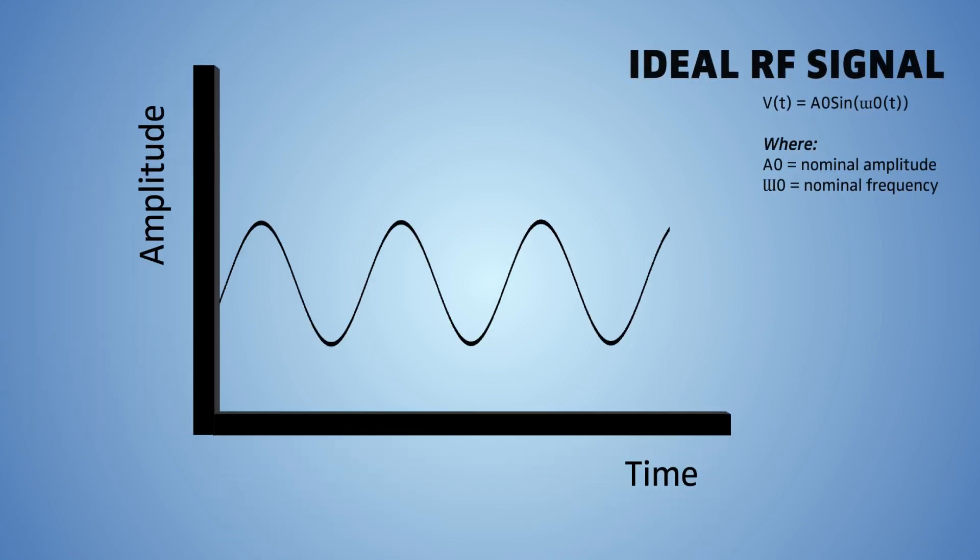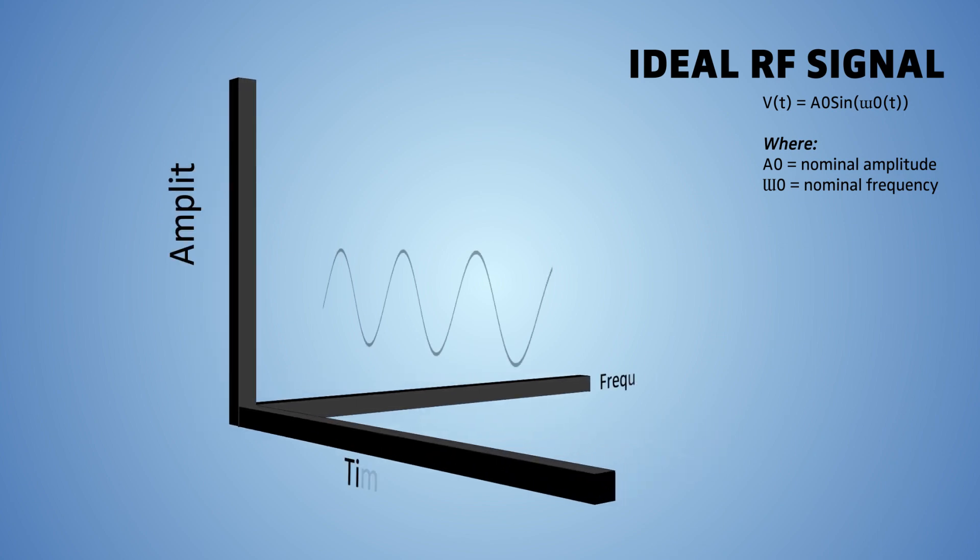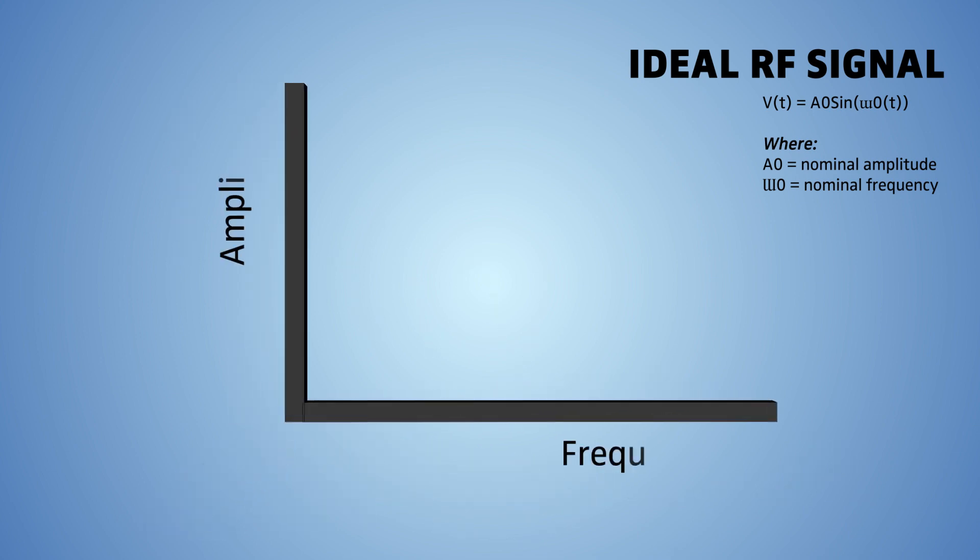This is an ideal RF signal. It has no amplitude or phase fluctuations with respect to time. If we change our perspective from the time domain to the frequency domain, we will see just a single, clean carrier signal at a specific power level.